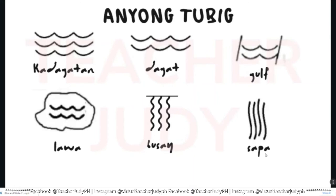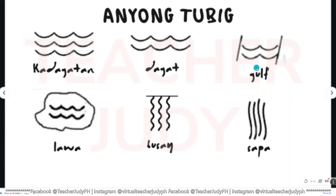Mao kining simbolo sa anyong tubig. Mao kining kadagatan — naasa tuloka ang waves, ang inyong waves na ituloka. Dagat, daluyon, golf or look siya sa Tagalog, golf, lawa, busay, sapa.